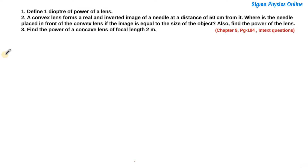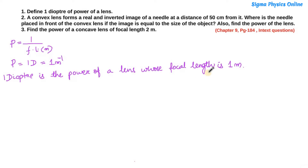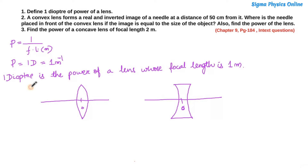Let's solve the first question. The power of a lens is given by the reciprocal of its focal length expressed in meters. Power of a lens is expressed in the unit of diopter, and one diopter means one meter inverse. One diopter is the power of a lens whose focal length is one meter.